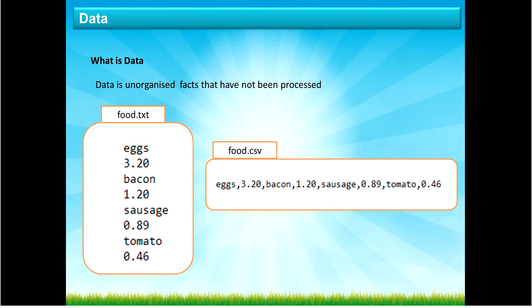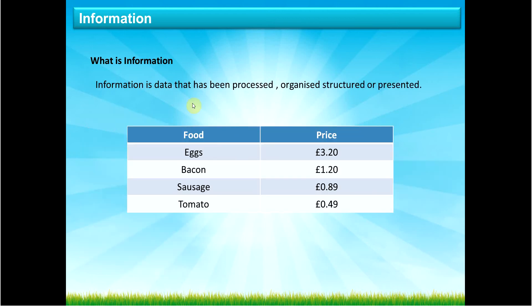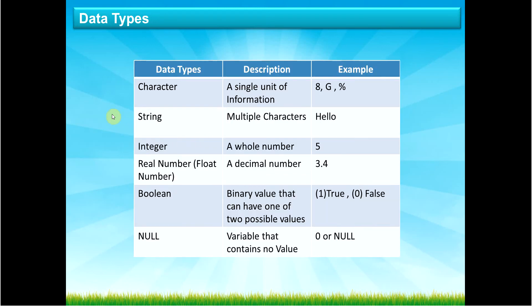So when does data become information? Data becomes information when it is usable — when it's organized, structured, or presented in a way we can use or understand it. Here I've presented it in a table. Perhaps it's for a food store: eggs for sale at three pounds twenty, bacon at one pound twenty, and so on. So that leads me on to data types.